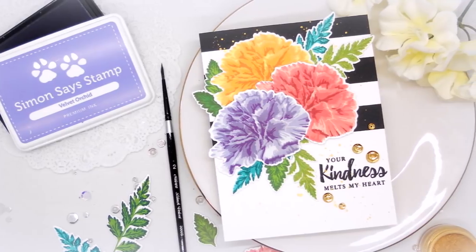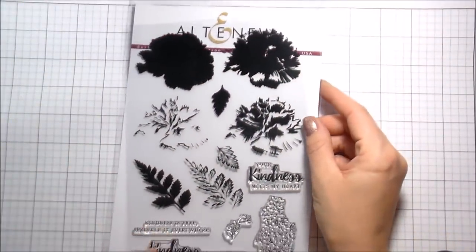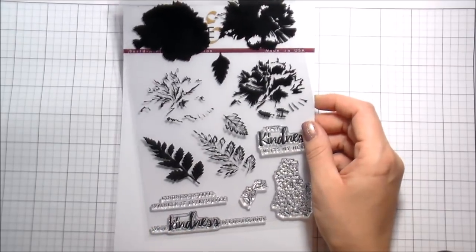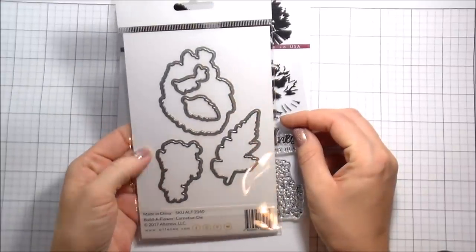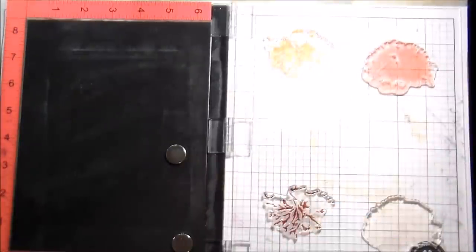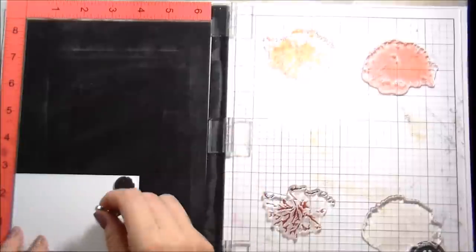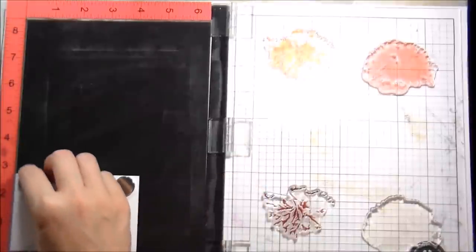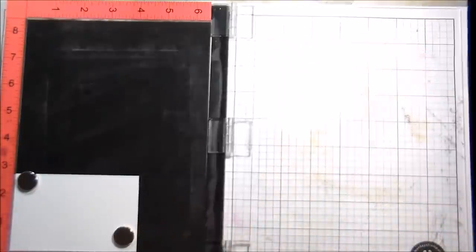So the stamp set that I am using today is actually part of a bundle. This is the Build-A-Flower Carnation Stamp Set and Die. I absolutely just adored the sentiments in this set. They're all about kindness and it's just a really sweet set. I typically do not do multi-layer stamping, but when I started this series it was about teaching you guys things and challenging myself. So here we are.